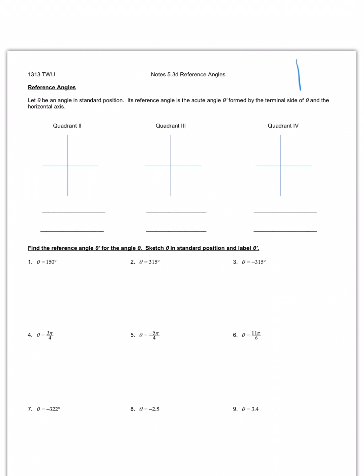Let's think about quadrant one. If I have an angle where the initial side is here and the terminal side is here, this would be angle theta. It has to be an acute angle formed by the terminal side and the horizontal axis. So in quadrant one, the reference angles are really easy — theta is equal to theta prime. That's only true for quadrant one.